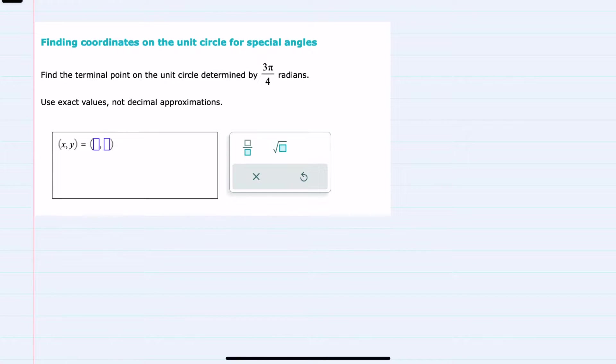In this video I'll be helping you with the Alex problem type called finding coordinates on the unit circle for special angles. Here we're asked to find the exact values for the terminal point for 3π/4 radians.